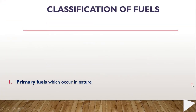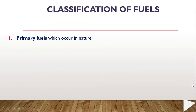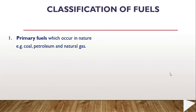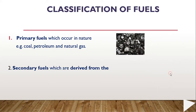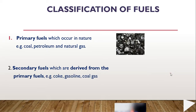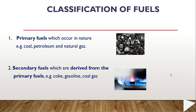Classification of fuels: First, primary fuels, which occur in nature. Examples are coal, petroleum, and natural gas. Second, secondary fuels, which are derived from primary fuels. Examples include coke, gasoline, coal gas, etc. So these are the two types of fuels: primary and secondary.